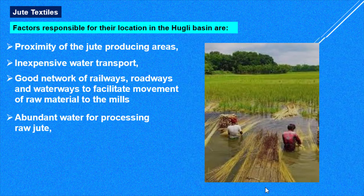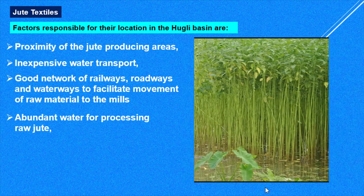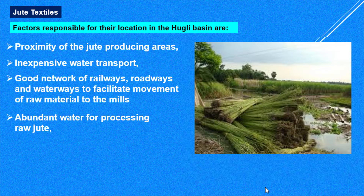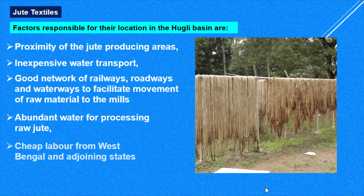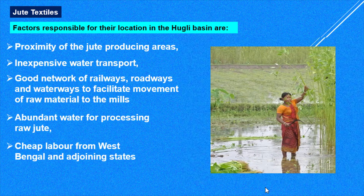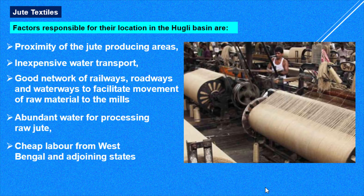Abundant water is available for processing raw jute. Jute takes around eight months to grow, is tall with a thin stem, and after cutting it must be soaked in water so the outer layer decomposes. The raw jute is then cleaned in water and dried, requiring a lot of water throughout — which is available in West Bengal. Cheap labor from West Bengal and adjoining states like Uttar Pradesh, Bihar, and Jharkhand is also easily available.